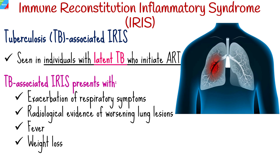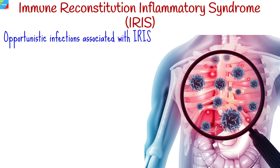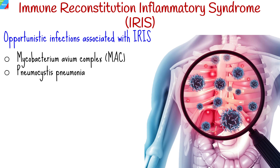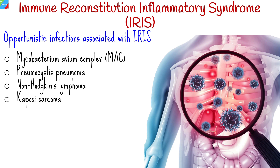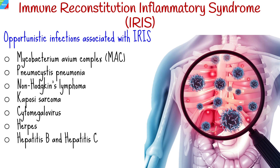Several other opportunistic infections are associated with immune reconstitution inflammatory syndrome, and they include Mycobacterium avium complex, Pneumocystis pneumonia, non-Hodgkin's lymphoma, Kaposi sarcoma, cytomegalovirus, herpes, hepatitis B and hepatitis C, and cryptococcus.